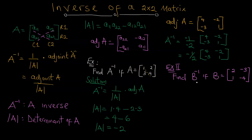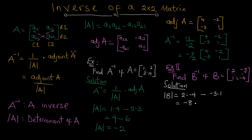The second problem: find the inverse of B if B equals [[2, -3], [1, -4]]. We obtain the determinant of B. The elements on the leading diagonal are 2 and negative 4, so we compute 2 times negative 4 minus negative 3 times 1. That gives negative 8 minus negative 3, which is negative 8 plus 3, giving a determinant of negative 5.